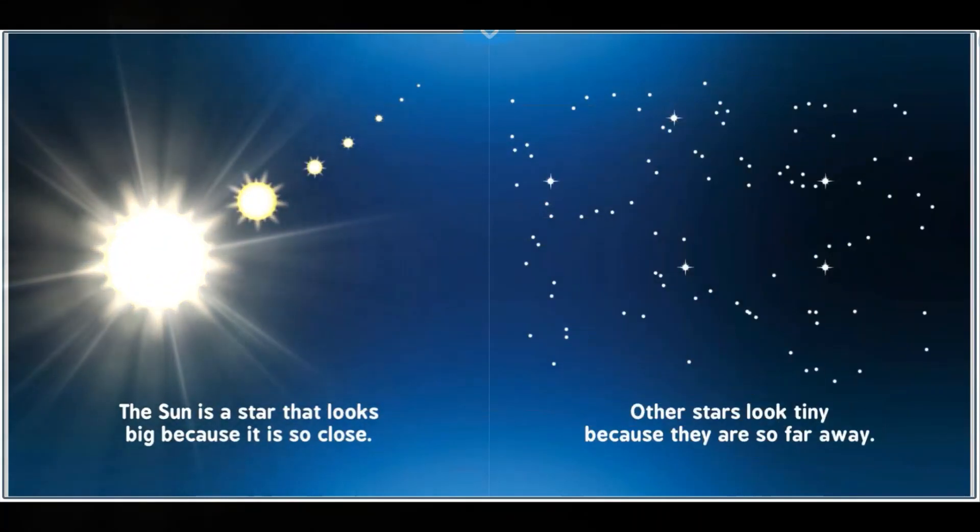The sun is a star that looks big because it is so close. Other stars look tiny because they are so far away.